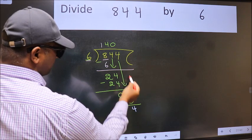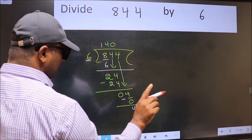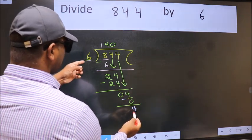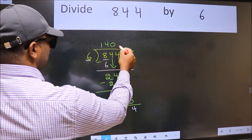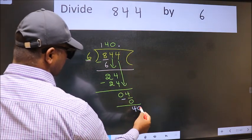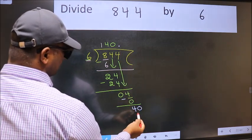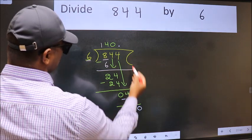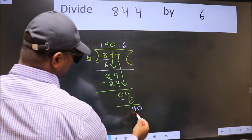Over here, we did not bring any number down. And 4 is smaller than 6. So now we can put dot and take 0. So 40. A number close to 40 in 6 table is 6×6=36.